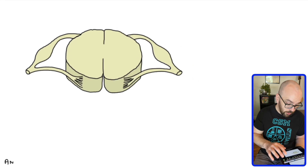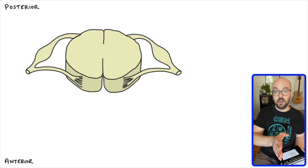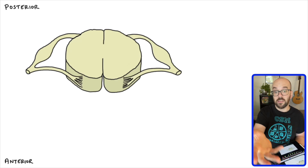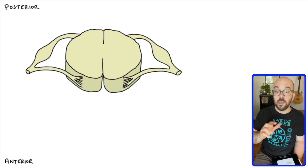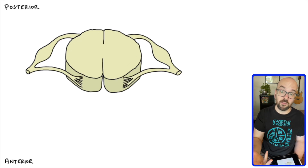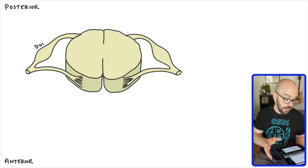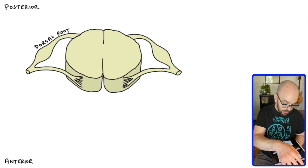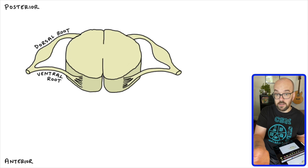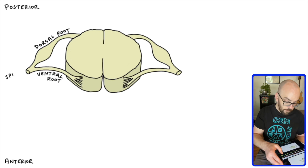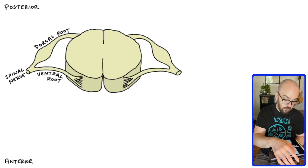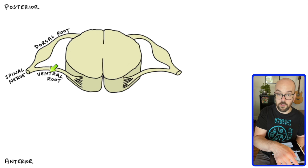To orient ourselves in the diagram, here we have the anterior or front side of the spinal cord, and at the top of the diagram I have the posterior or back side of the spinal cord. Another word for our posterior side is dorsal; another word for our anterior side is ventral. We're going to use the words dorsal and ventral a lot. Where that spinal nerve branches as it enters the spinal cord, we're going to have the dorsal root, and on the ventral side we'll have the ventral root.